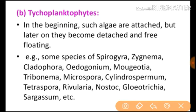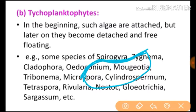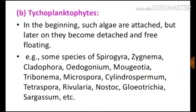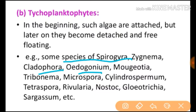The second type is tychoplanktophytes. In the beginning such algae are attached, but later on they become detached and free-floating. During their germination or early stage of life they attach to the ground, but after spending some time they detach and float freely. Examples include some species of Spirogyra, Cladophora, Oedogonium, Tribonema, Microspora, Nostoc, Tetraspora, and Sargassum.